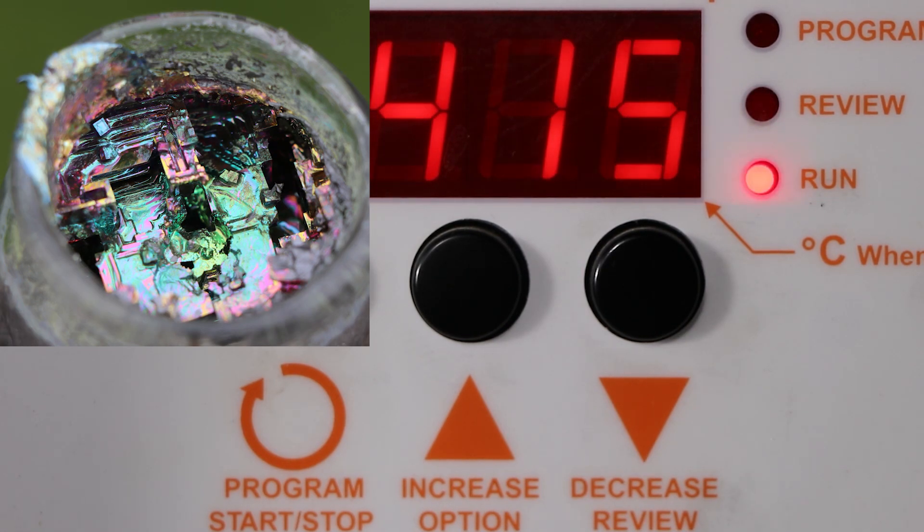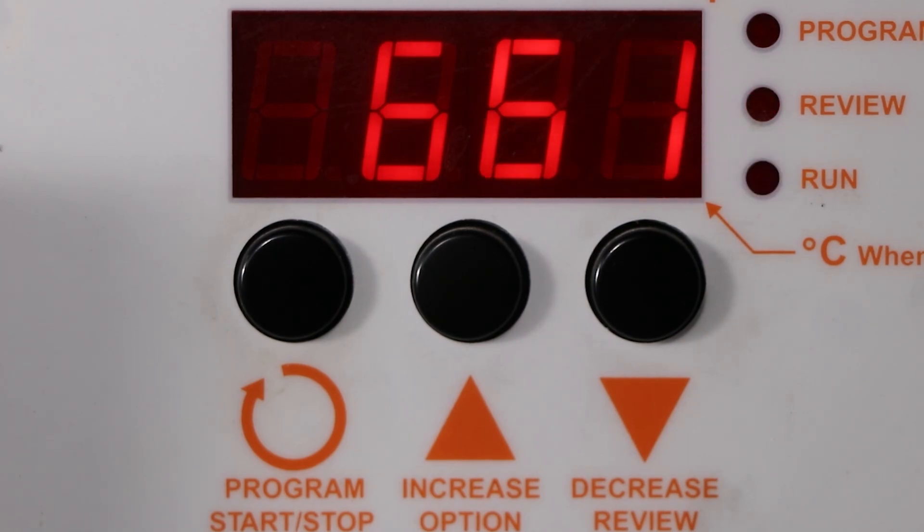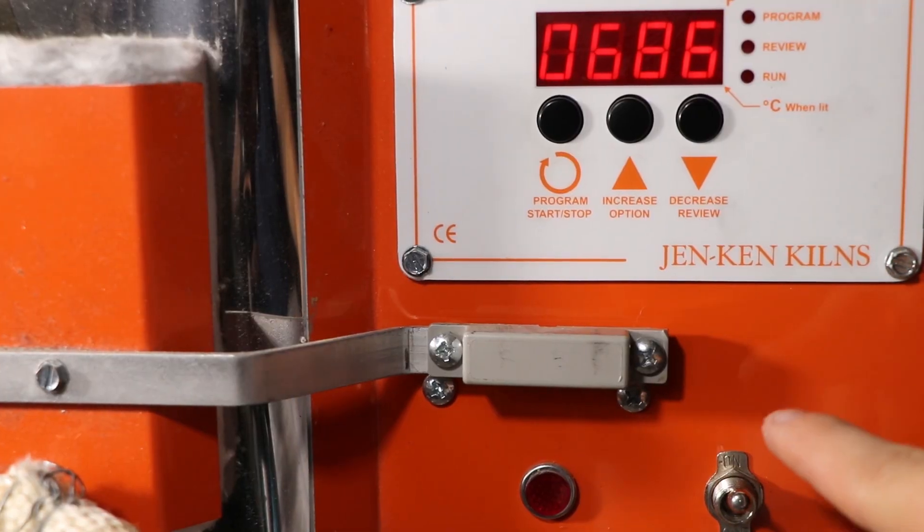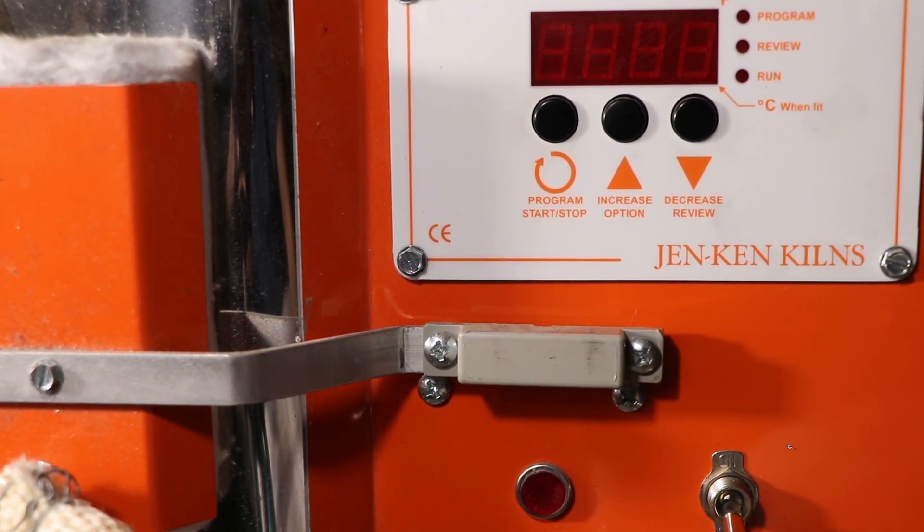And so although you do need to bring the kiln up to a target temperature for the program to work, you don't necessarily have to bring it back down. You can have the program just shut off at that point. And so for this program, after it gets up to 700 degrees, it holds it for one hour and then shuts off.